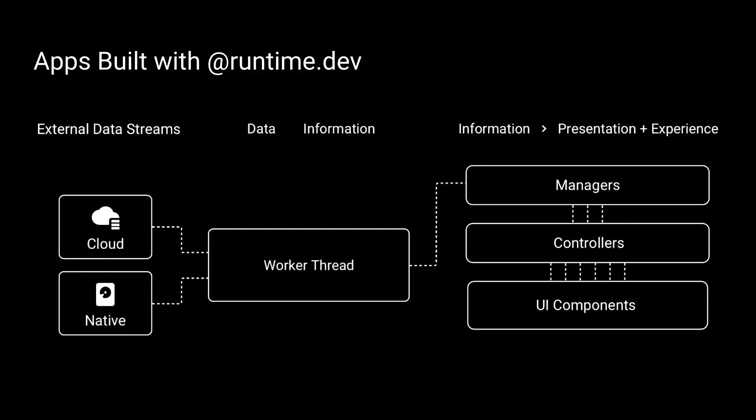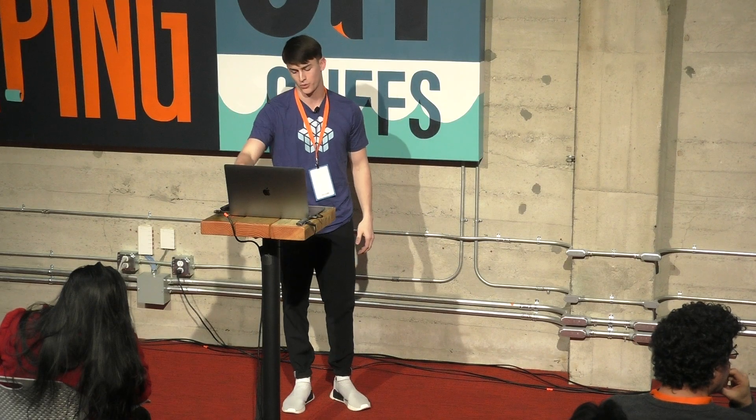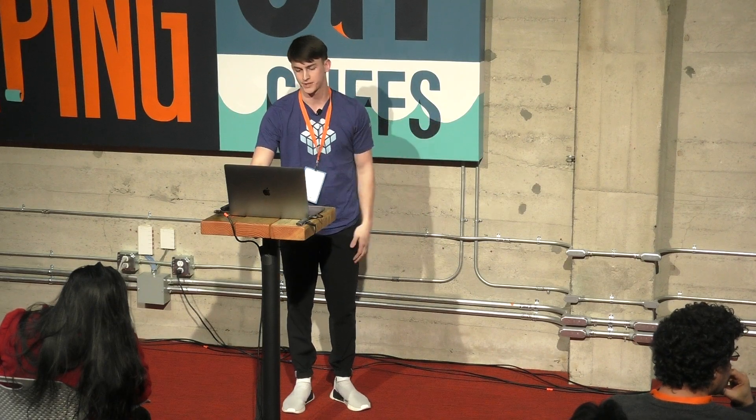We have our platform called Runtime. Runtime apps have two streams — continuous streams from the database, whether Firestore or AWS, always streaming in. And then we have streams coming from the native apps as well, so large states continually streaming in. Because we're dealing with a large amount of state, we want to make sure that we do a lot of this computation on web workers. Web workers are a great way to buffer and get that heavy-duty work out of the way, and then we pipe that up to the main thread.